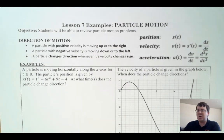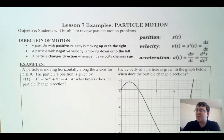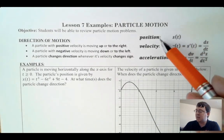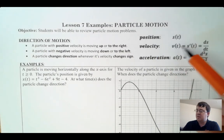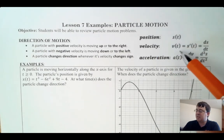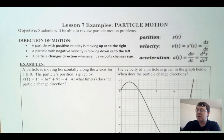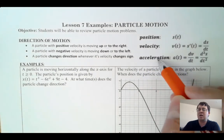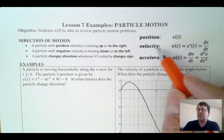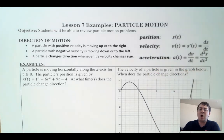Lesson seven — we're going to review some particle motion problems. The biggest thing to remember is that position, velocity, and acceleration are all connected through derivatives and anti-derivatives. If you take the derivative of position you get velocity; the derivative of velocity gives acceleration. Conversely, the anti-derivative of acceleration gives velocity, and the anti-derivative of velocity gives position. They're all related through integrals and derivatives.